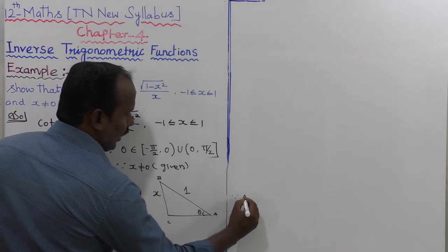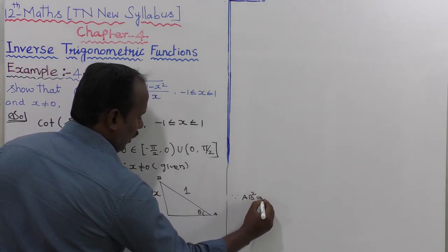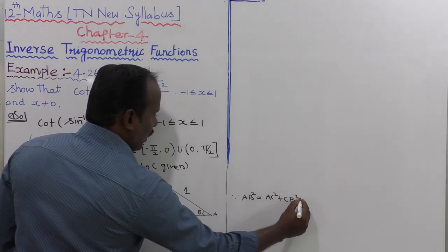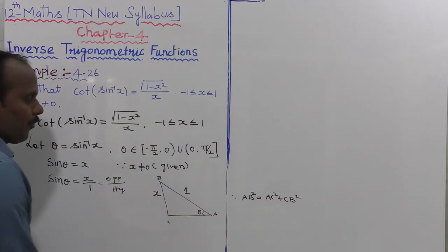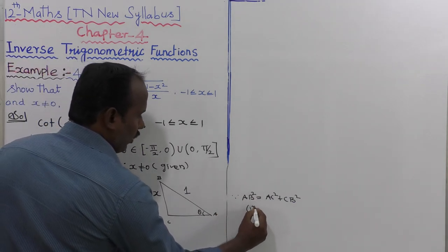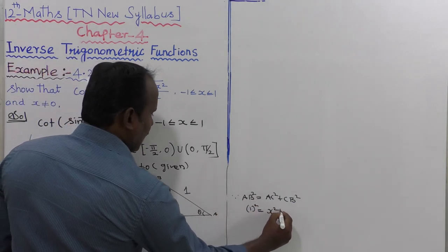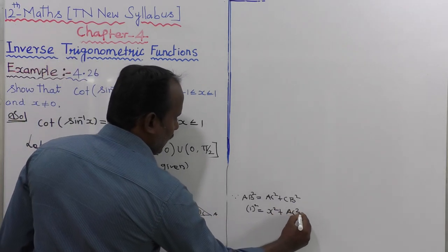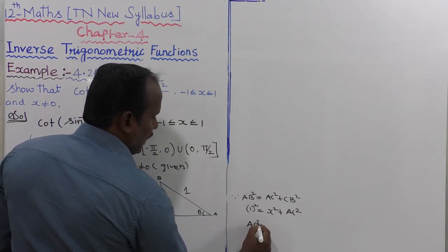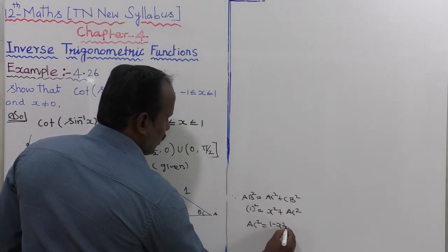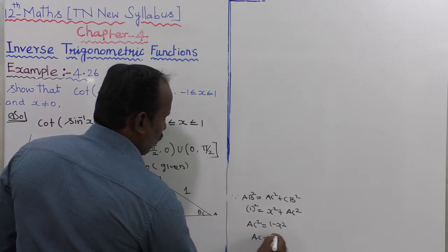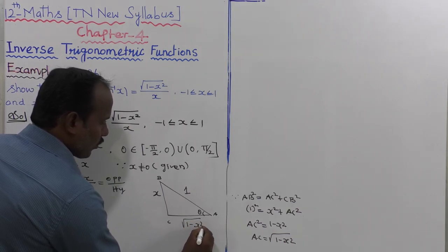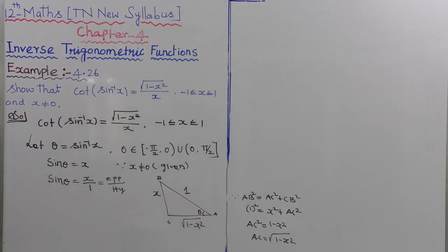Suppose we label the vertices A, B, and C. Since AB squared equals AC squared plus CB squared — that is the Pythagorean theorem — AB squared equals 1 squared equals x squared plus AC squared. So AC squared is equal to 1 minus x square, and therefore AC is equal to root of 1 minus x square.